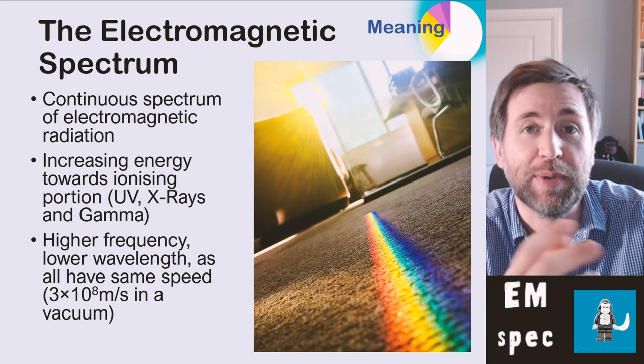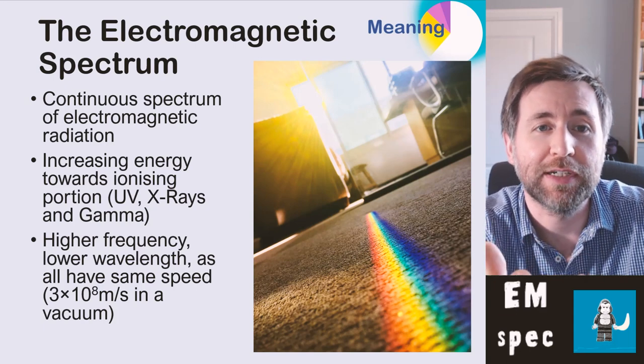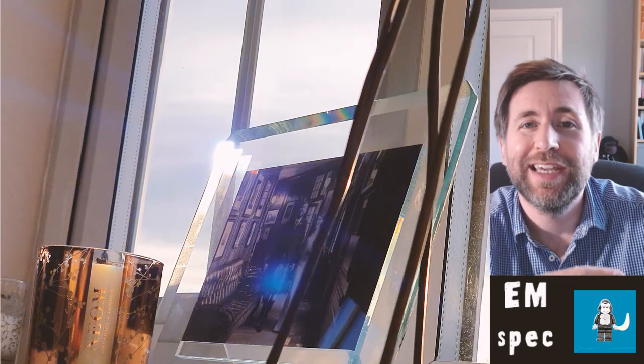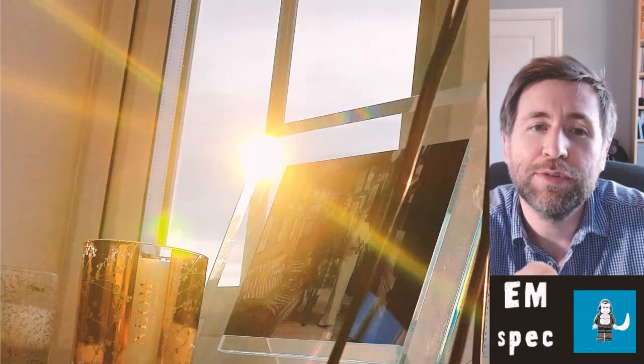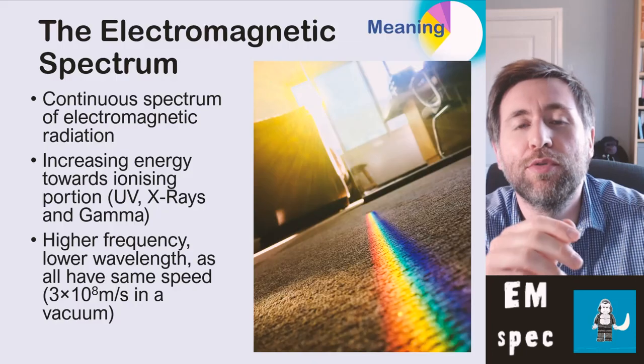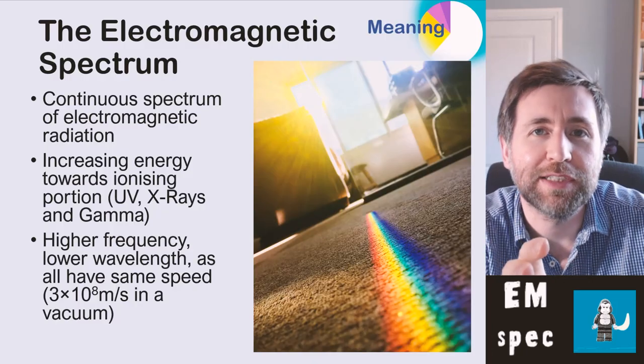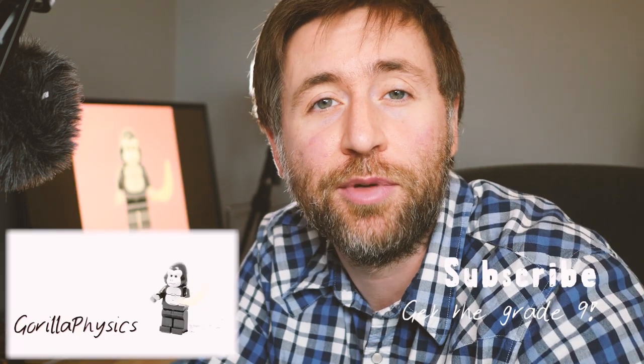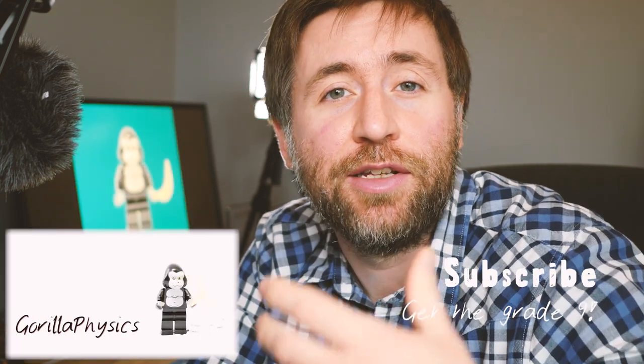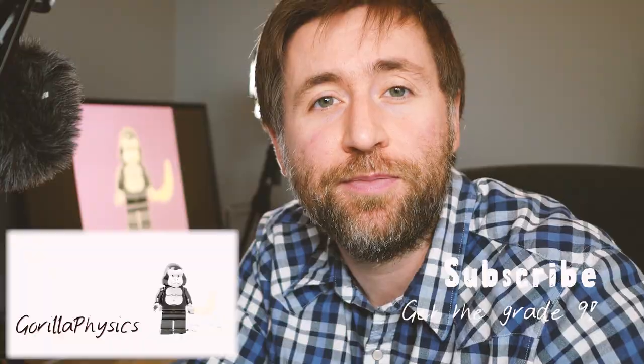So let's chat about the EM-SPEC, the electromagnetic spectrum. It's a continuous spectrum of all electromagnetic radiation. In this video, I'm going to show you how to master everything you need to know about the electromagnetic spectrum. I'm going to start by something that you probably are familiar with: the idea of a rainbow.